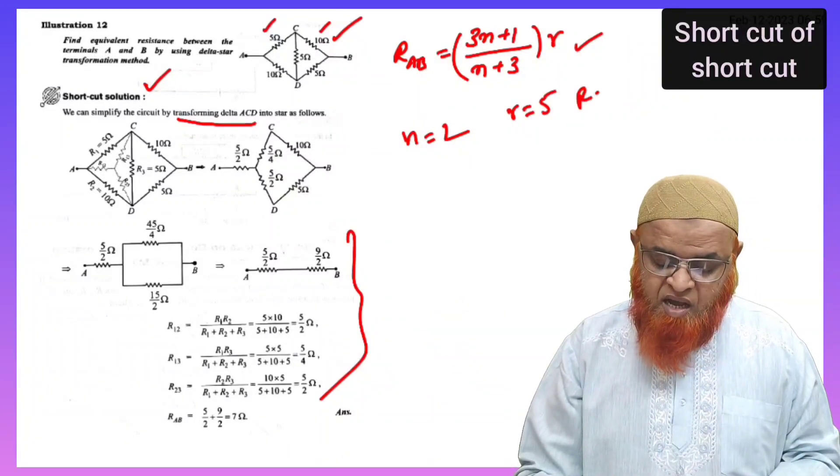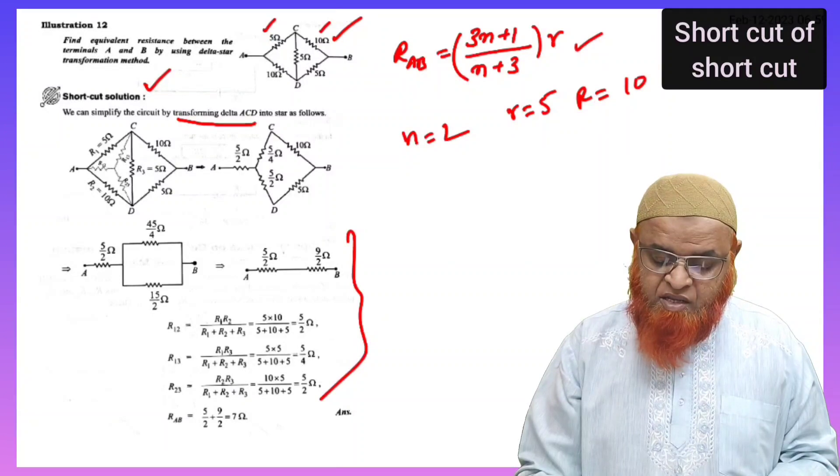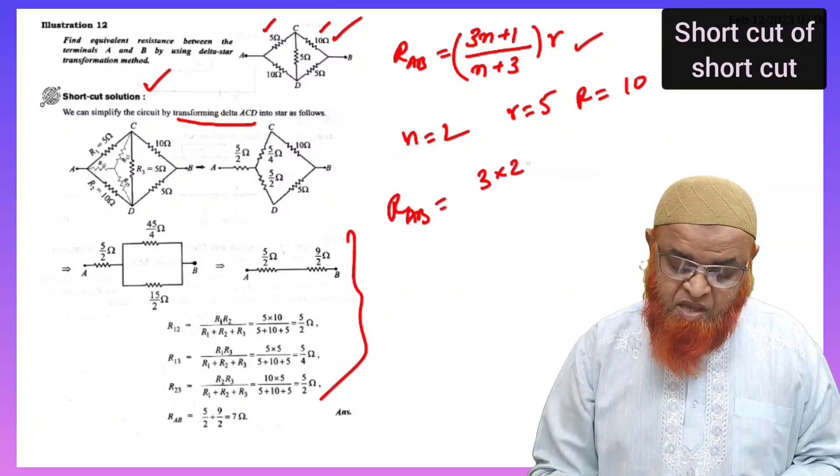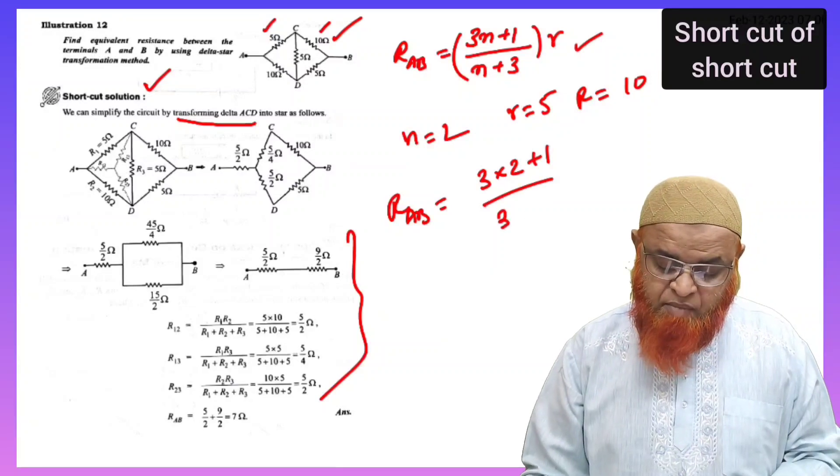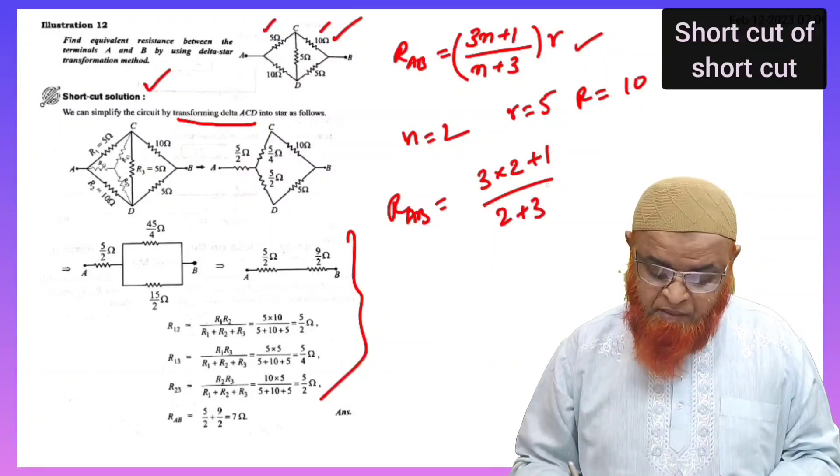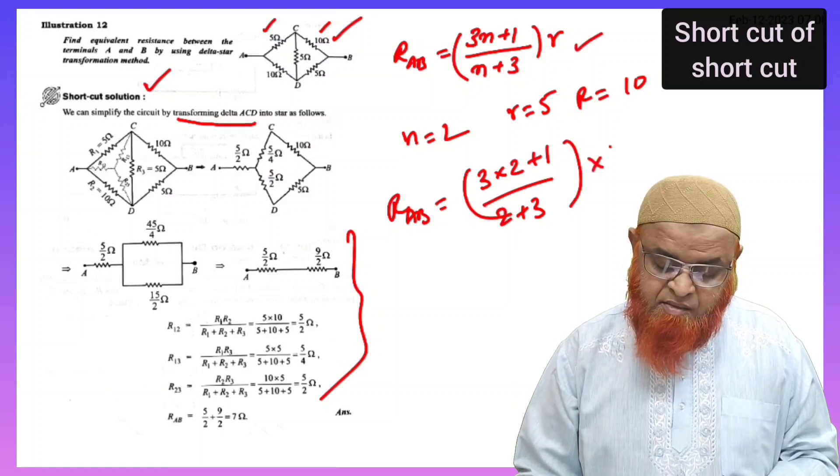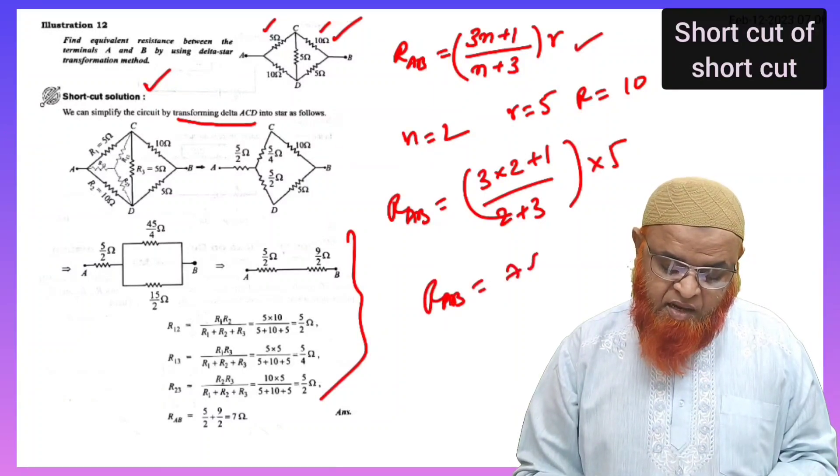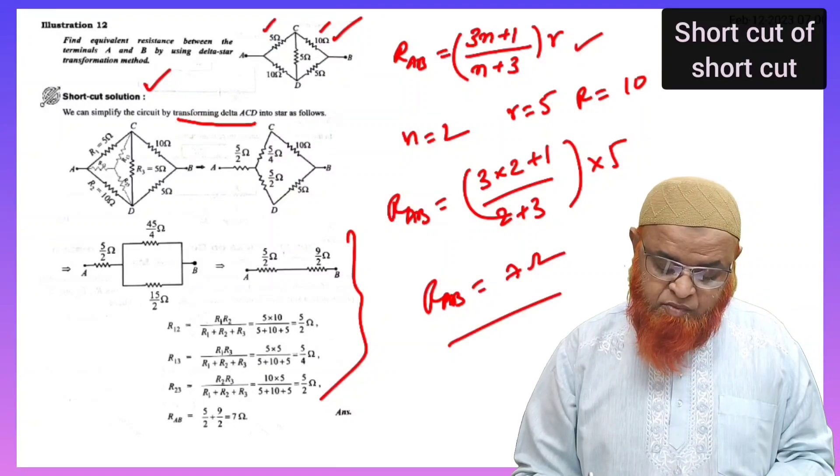Then, what is small r here? Small r is 5 and capital R is going to be 10 here. Just substitute the formula RAB equals 3 times 2 plus 1 by... sorry, 2 plus 3 into small r. Small r is nothing but 5. So, directly you are getting the answer as 7 ohms.